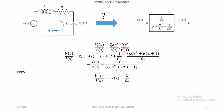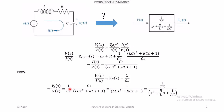Now we can calculate V_C over V by multiplying V_C over I and I over V together. Multiplying 1/(Cs) by Cs over the total impedance expression and simplifying gives the transfer function. Dividing numerator and denominator by LC yields the form with 1/(LC) in the numerator and s² in the denominator expression.